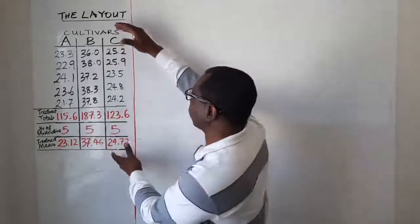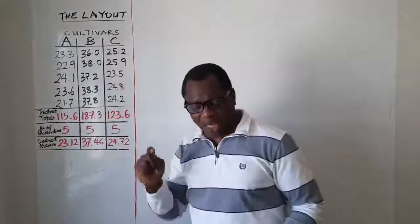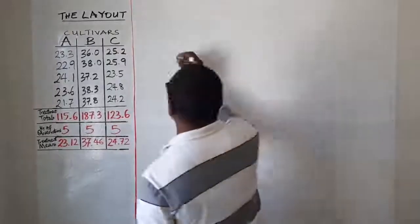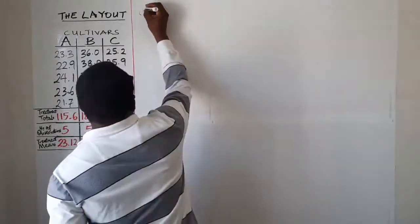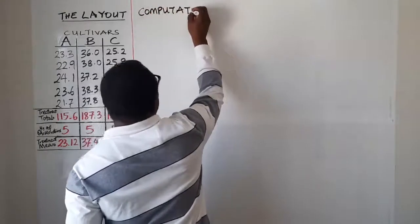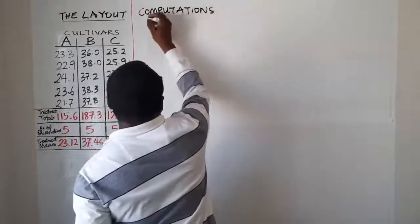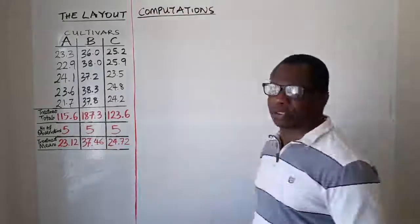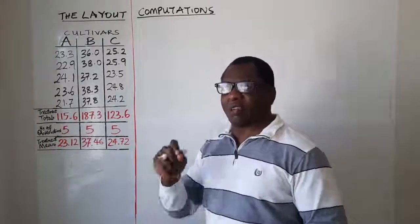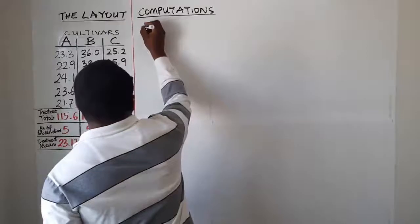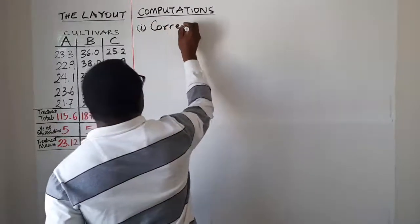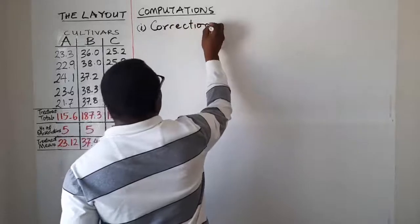We will continue from here to solve the problem. After you have reached this stage of the layout, the next thing to do is what we call computation. So we do our computations, and for computations you start with the correction factor — that's the first thing to be computed.